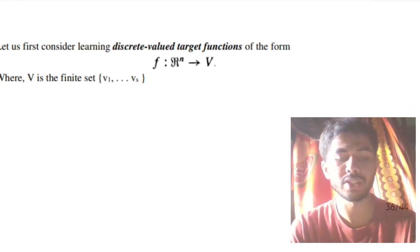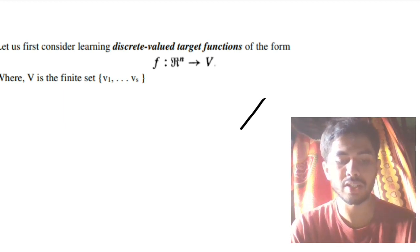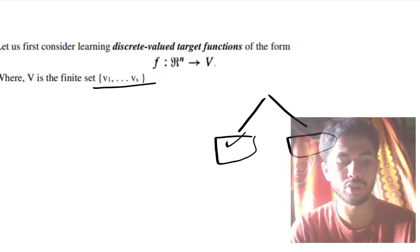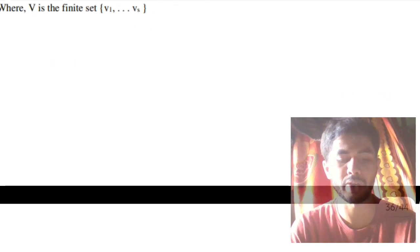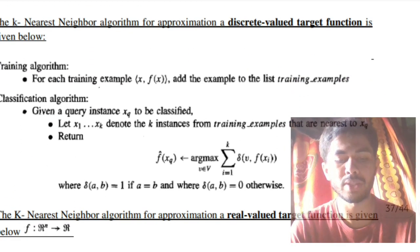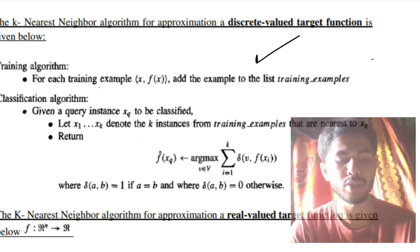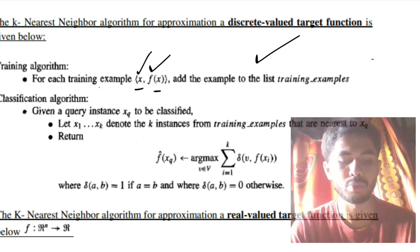After you have written that much, you have to consider the two cases in KNN. First is the discrete target-valued function, and second one is the real-valued function. In the discrete-valued, you will be having a finite set in the output which will be written as v1 till vs. After writing this, you have to write the algorithm. The algorithm consists of two parts: training and classification. Training is the same for both real-valued and discrete-valued. In that, you will be having a training example x and f(x). x is the input, f(x) is the output, which will be added to the list of training examples.